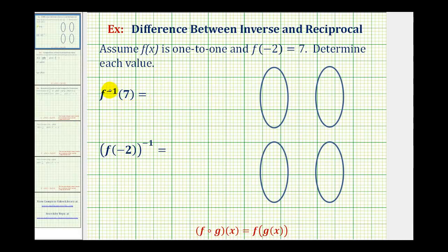This negative one here indicates inverse function notation — this is f inverse of seven. This negative one here is an exponent. So to evaluate this, we find the value of f of negative two and then raise it to the power of negative one, which would be equal to the reciprocal of f of negative two.